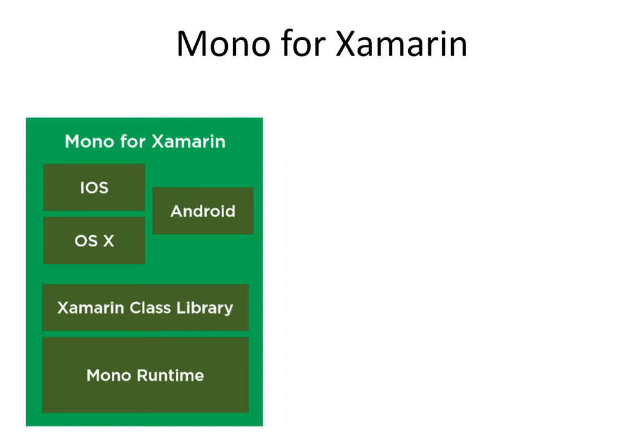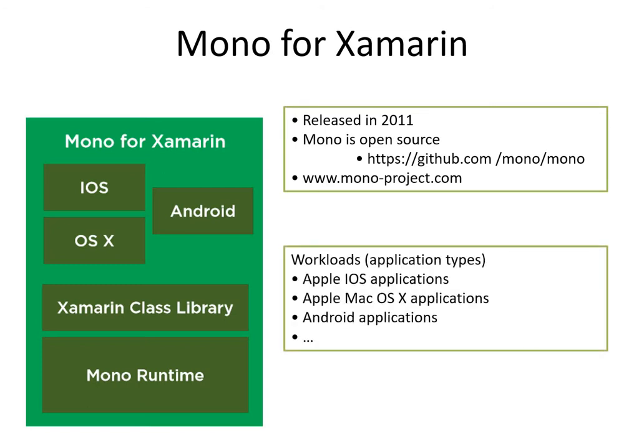There are a few disadvantages. For Mac and iOS, you will have to rebuild on a Mac system, so a Mac system is also required. Apart from this, there is one more privilege: you can make use of Xamarin form-based applications or native applications. It was basically released in 2011 and is fully open source. You can go to mono-project.com to have in-depth knowledge about it.